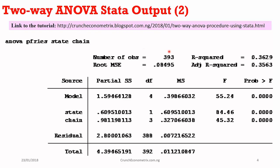The number of observations is 393. I originally had 410, but 17 had missing values, and Stata drops observations without values, leaving 393. My R-squared is 0.3629, meaning 36% of the variation in the dependent variable — prices — is explained by the explanatory variables, state and chain.